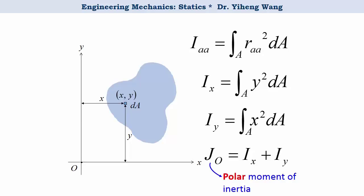So in a 2D representation, when you see J, the polar moment of inertia about a point O, that means the area moment of inertia about an axis that is perpendicular to this plane and passes through point O.